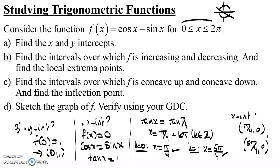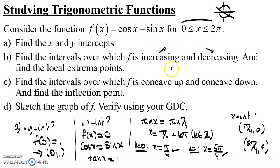In Part A, we've determined particular points of the function — the x and the y-intercepts — that will help us graph it later with more accuracy. Now in Part B, we're asked to find the intervals over which f is increasing and decreasing, and then find the local extrema. The local extrema of a function occur at points where the function transitions between increasing and decreasing.